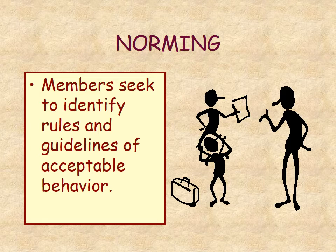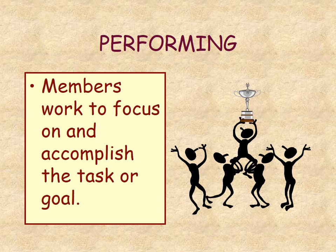By third semester, norming begins — you've identified yourself as an individual and you're able to seek friendships and find ways of functioning that improve the situation. By the last semester of the program you're performing — you're able to focus on a task, accomplish goals, find common ground with others, and work towards completing the goal at hand.